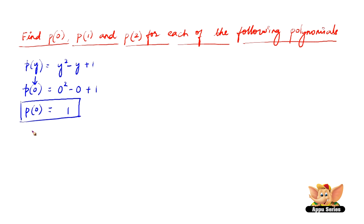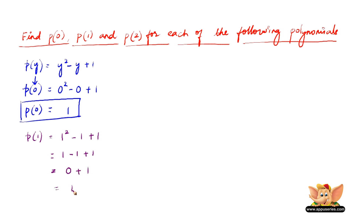Now let us see what p of 1 is. p of 1 will be 1 squared minus 1 plus 1, which is 1 minus 1 plus 1. 1 minus 1 is 0, plus 1, and 0 plus 1 is 1. Therefore, p of 1 is 1.